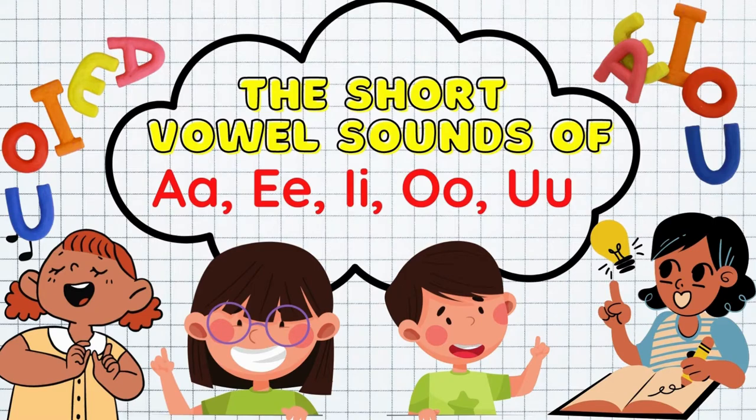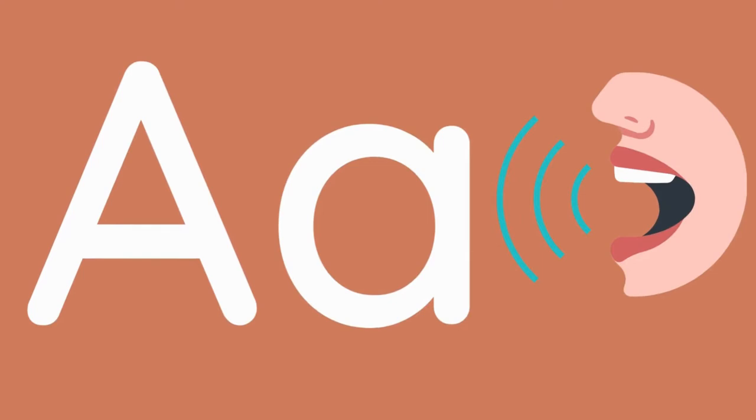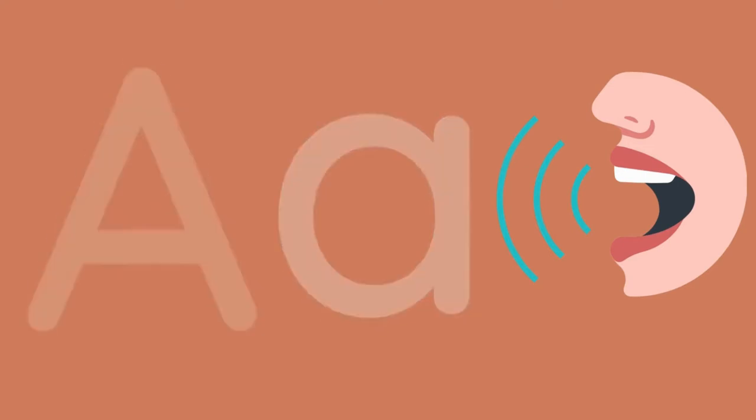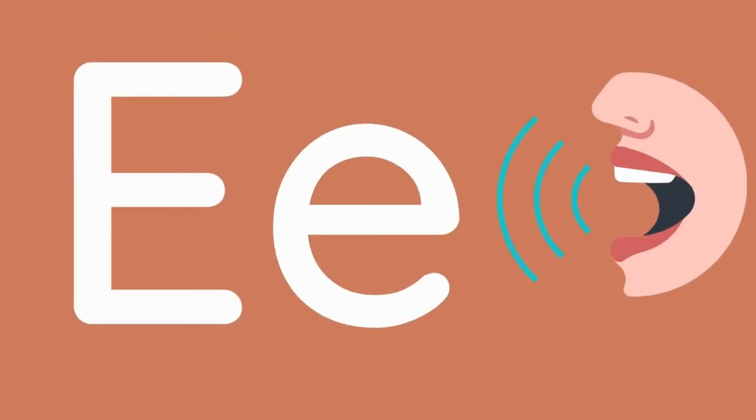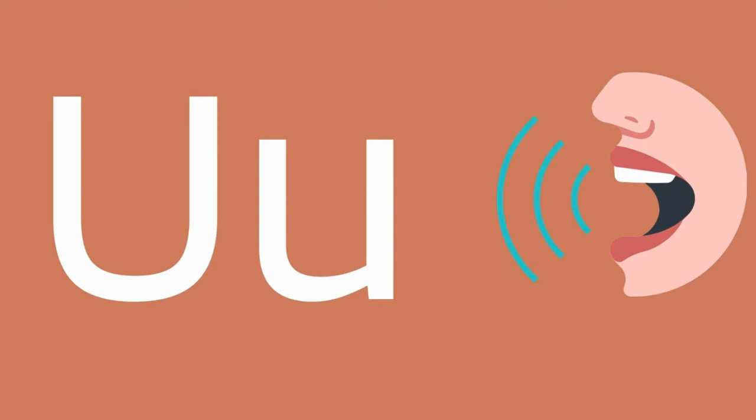Can you still remember the different vowel sounds? The letter A makes the sound. Letter E makes the sound. The letter I makes the sound. Letter O makes the sound. Letter U makes the sound.